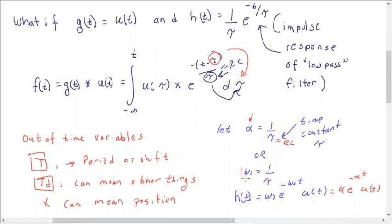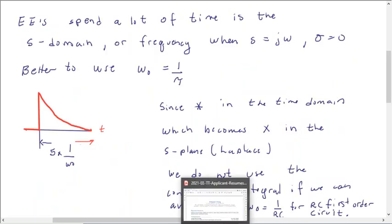Or we could call it omega-naught. Then we would rewrite h of t, omega-naught, e to the minus omega-naught t, u of t, of course. Or we could write this. And then you could put it back into that convolution integral, and there'd be no confusion.